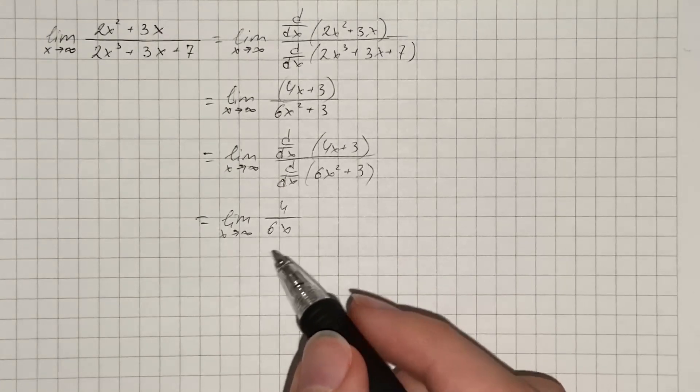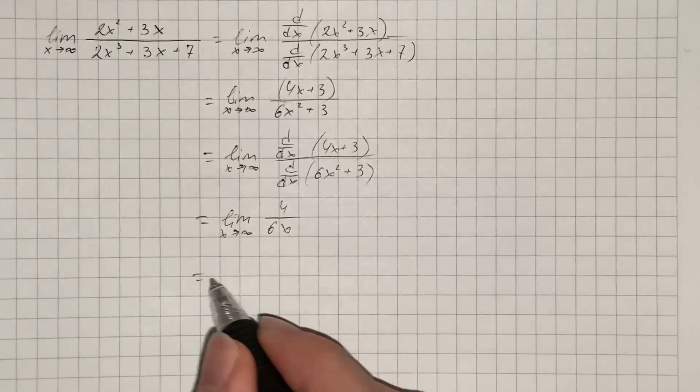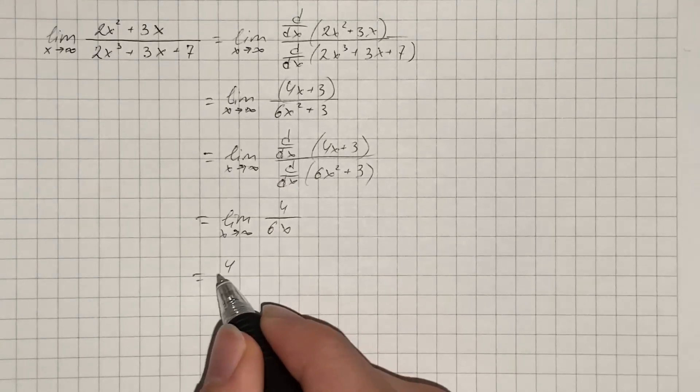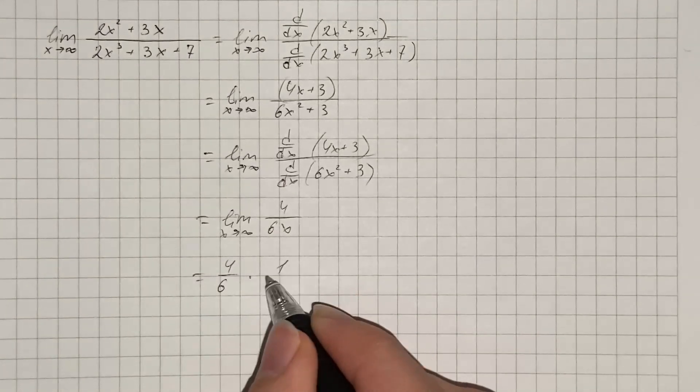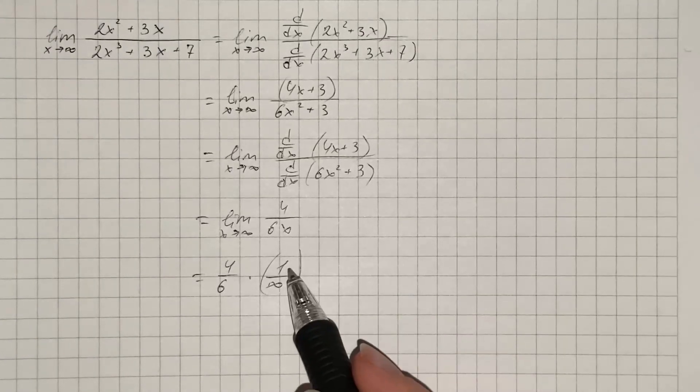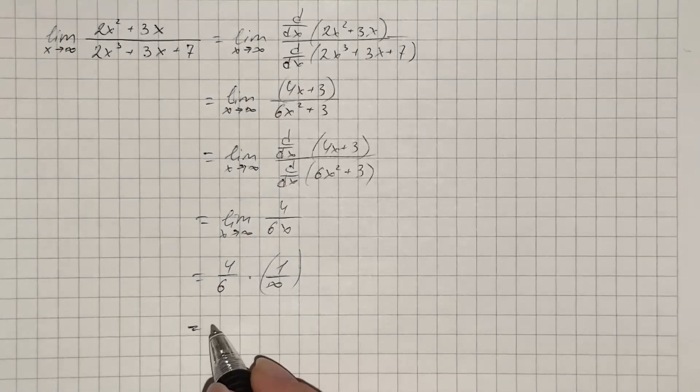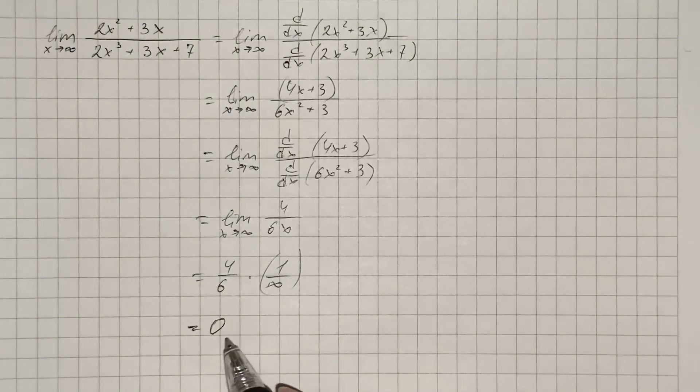And now we plug the value of x, which equals infinity, to get 4 over 6 times 1 over infinity. We know that when we divide 1 by infinity, we get 0, therefore the value of the limit is 0.